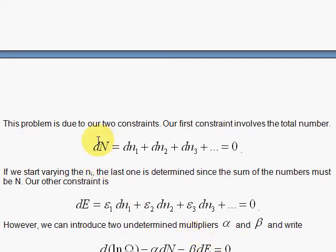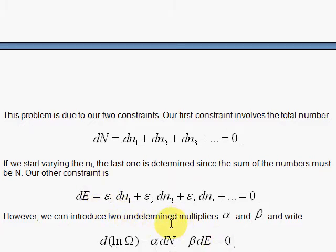Capital N is a constant, so d-capital-N is equal to 0, and d-capital-E is equal to 0 because energy is constant. We will use the trick we did earlier with undetermined multipliers where we take 0 minus 0 equals 0 — remember, we did that with the X and Y analysis for the area. Here we have two constraints, so we'll take 0 minus alpha times 0 minus beta times 0.